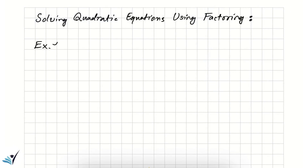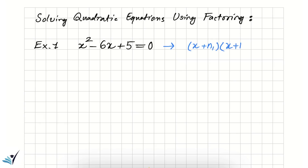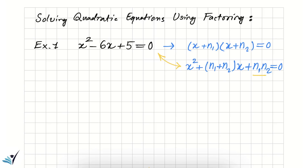The equation is x squared minus 6x plus 5 equals zero. Our goal is to transform this into a factored form: open parenthesis x plus n1 close parenthesis times open parenthesis x plus n2 close parenthesis equals zero. Expanding using the distributive property gives x squared plus n1 plus n2 times x plus n1 times n2 equals zero. Comparing with the original equation, n1 times n2 has to be positive 5 and n1 plus n2 has to be negative 6.